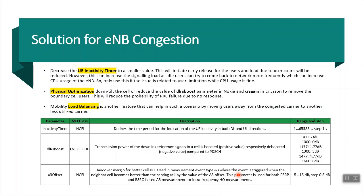There are three things. The first parameter is the UE inactivity timer. In Nokia its name is the inactivity timer, and in Ericsson this parameter name is T inactivity timer. This is the LN cell class parameter. It defines the time period for the indication of UE inactivity in both downlink and uplink direction. It ranges from 1 to 655.35 seconds and we can change it in steps of one second.